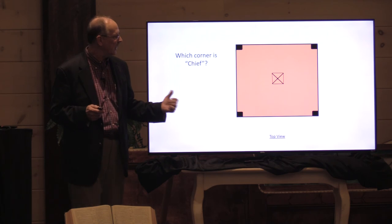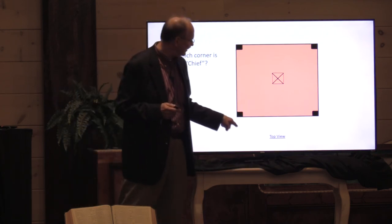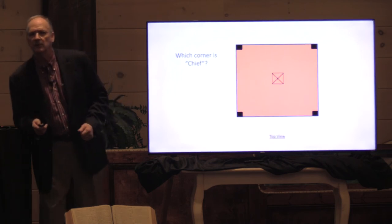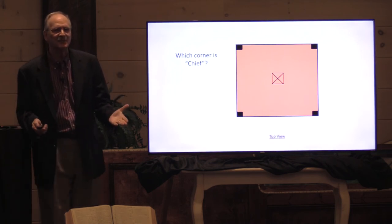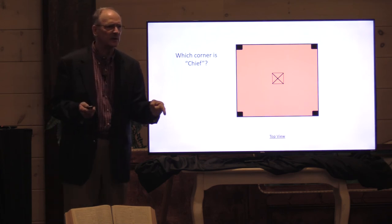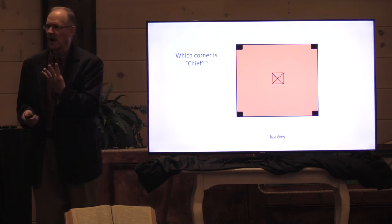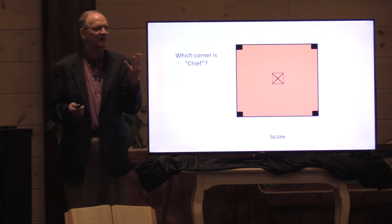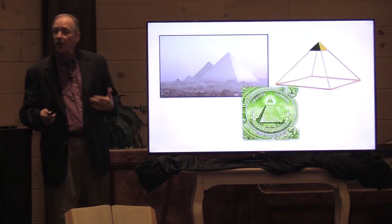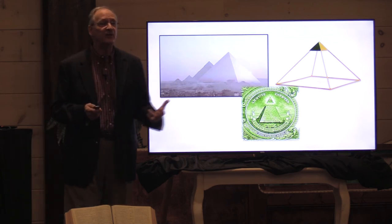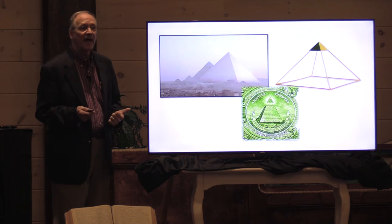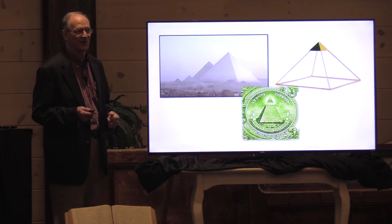Well here's my question: if this is a building and this is a top view of the building, which corner is the chief? Have you ever wondered that? How can you have a chief cornerstone? There's four of them right? Those of you who are mathematicians out there - I propose to you that the only way you can have a chief cornerstone is with a pyramid, a capstone, a chief cornerstone.